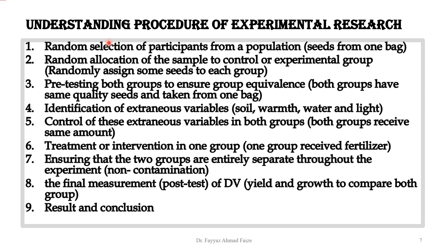If we apply this example to all experimental research, we arrive at the steps of experimental procedure. Step one is random selection of participants from a population. If we try to investigate something in a population, we go for a random selection of participants — just as we randomly took seeds from a bag. Selecting seeds randomly from the bag is similar to selecting participants randomly from a population.